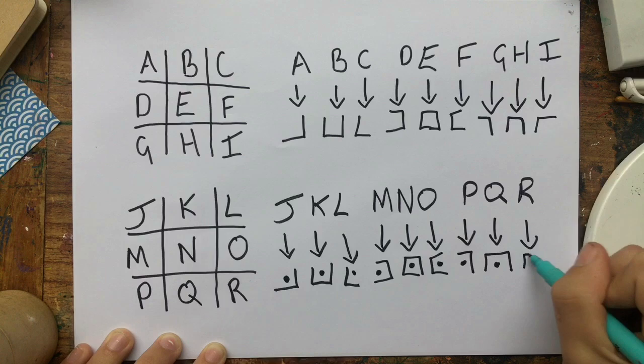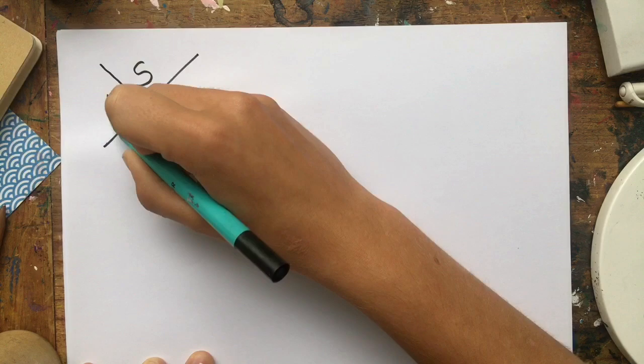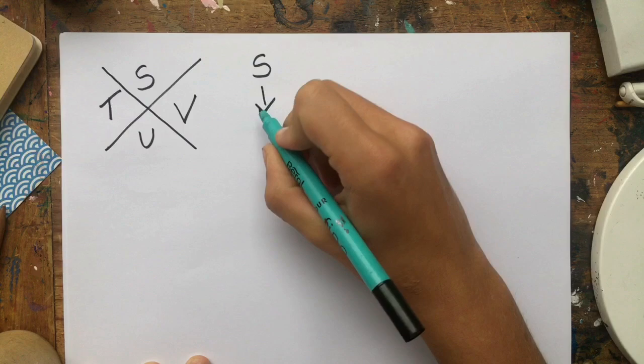So now we've covered 18 letters out of the 26 in the alphabet, meaning that there are only eight letters to go. So for the next two grids, you only have to draw a cross shape, like an X, instead of drawing one of those tic-tac-toe grids again.